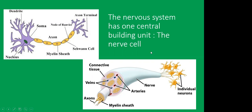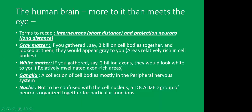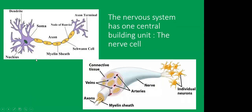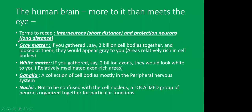The nervous system has one central building unit: the nerve cell, which has dendrites that receive inputs, an axon that sends out inputs, and an axon terminal that communicates with other nerve cells. Key terms: interneurons travel over a short distance, while projection neurons can travel from one brain region to another, or facilitate communication between the central and peripheral nervous system. Gray matter is where cell bodies are collected; white matter consists of myelinated axons with a characteristic yellowish-white appearance.